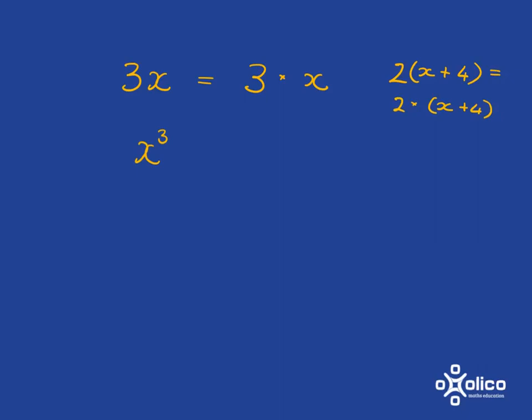A very different story to 3x is x cubed. x cubed, that exponent means that you've got x times x times x, x multiplied by itself 3 times.